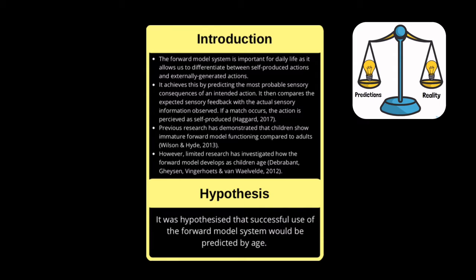For example, if you flicked a light switch, the Forward Model would predict that you'll see a light bulb turn on. It then compares what we expected to see with what we actually saw and if a match occurs, the action is perceived as self-produced.